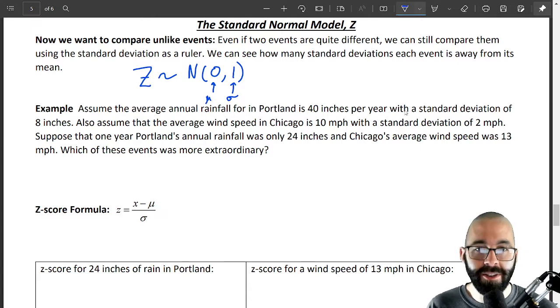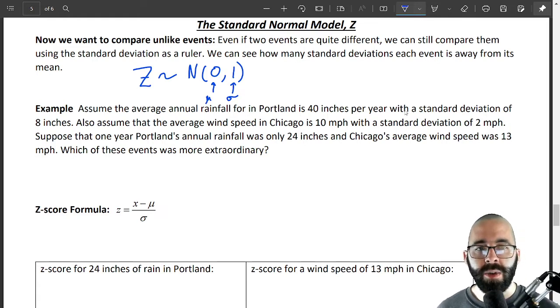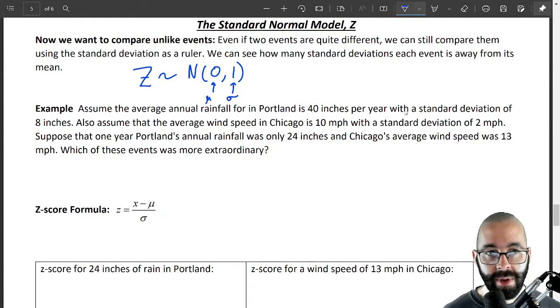Let's read through the example. So let's say, all of you are going to know the annual rainfall for Portland is about 40 inches per year with a standard deviation of about 8 inches, and it's normally distributed. And also assume that the average wind speed in Chicago is 10 miles an hour with a standard deviation of 2 miles an hour.